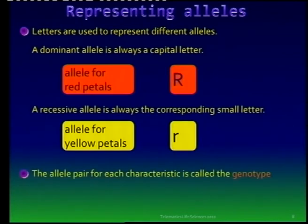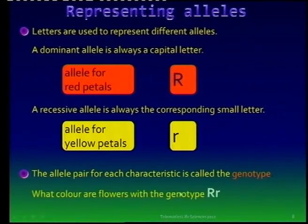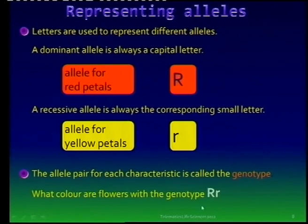We use capital letters to represent a dominant allele, and a corresponding small letter for the recessive allele — very important: don't use two different letters, use exactly the same letter in upper and lower case. This represents the genotype. For the heterozygous organism, the genotype will be capital R small r, meaning heterozygous — R in this instance representing red, which is dominant. It's also very important that you know what is meant by Mendel's Law of Segregation.